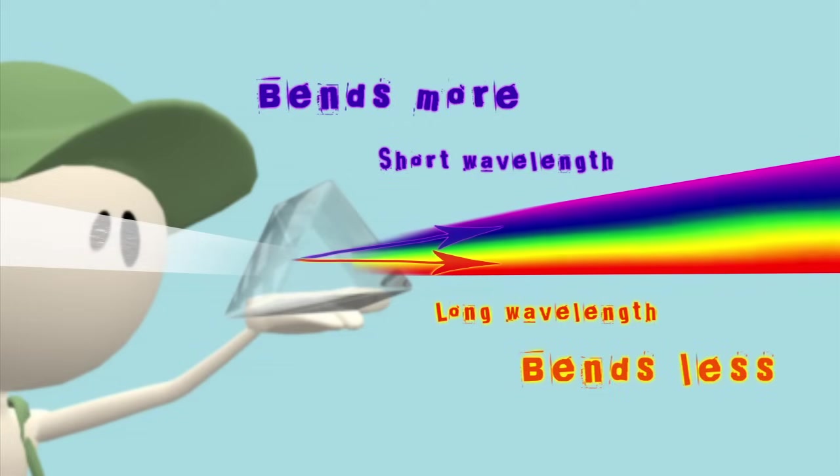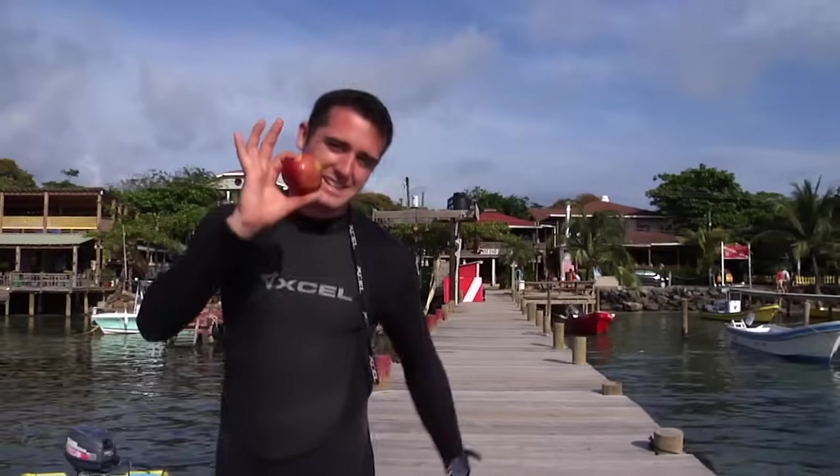The shortest wavelengths are violet, and the longest wavelengths are red. So this apple looks red because molecules in its skin interact with the various wavelengths of sunlight. Most of these wavelengths are actually absorbed by the apple, except red, which is reflected. Our eyes detect the reflected red light, and our brains register that we're seeing a red apple.